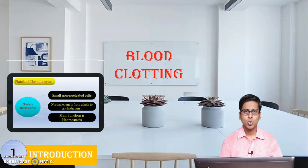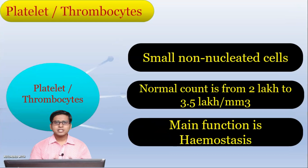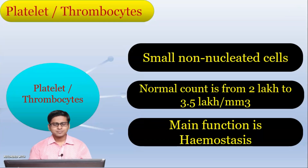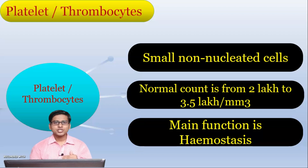In the introduction we are going to deal with the platelets. Platelets are also called as thrombocytes. These are small non-nucleated cells. The normal count is from 2 lakh to 3.5 lakh per cubic mm. This count may vary with the age, sex, and different physiological conditions of an individual.